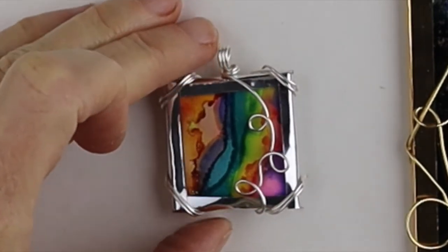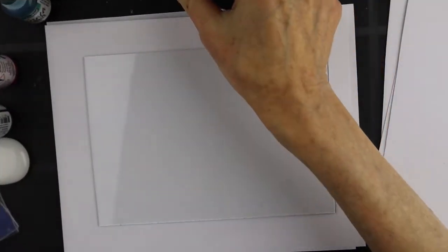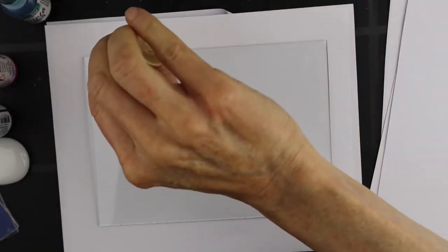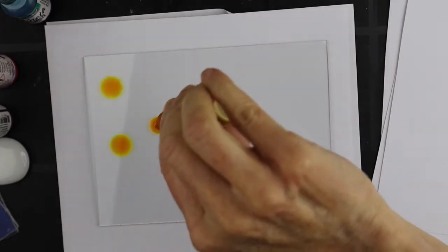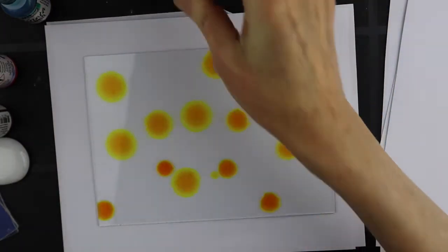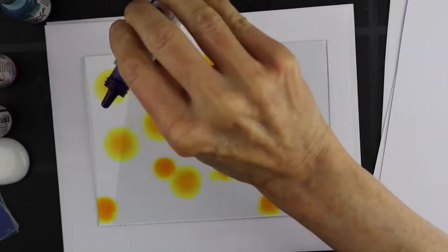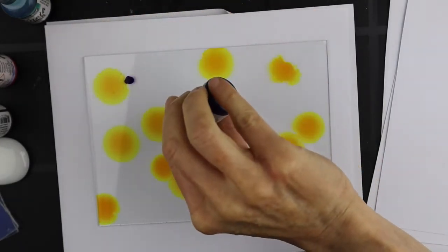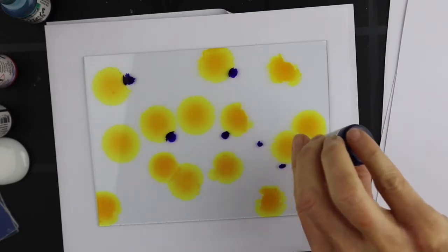Now so I'm going to play around with the inks on this. We're just going to put random drops around. I'm not going to worry too much about the design. I just want to fill up the whole area with color and I don't want to put too much of the dark.